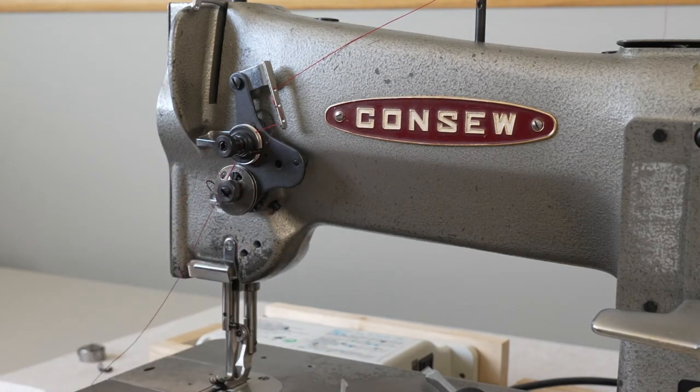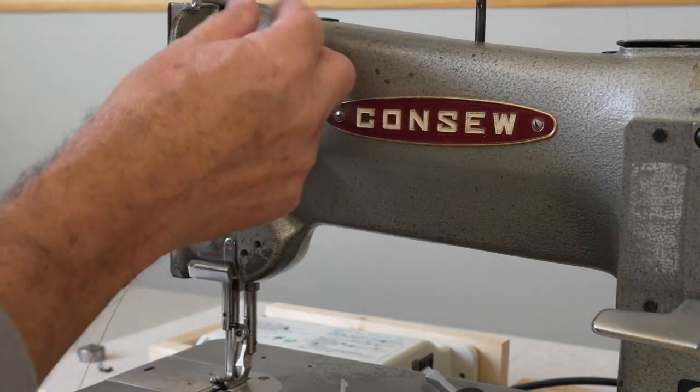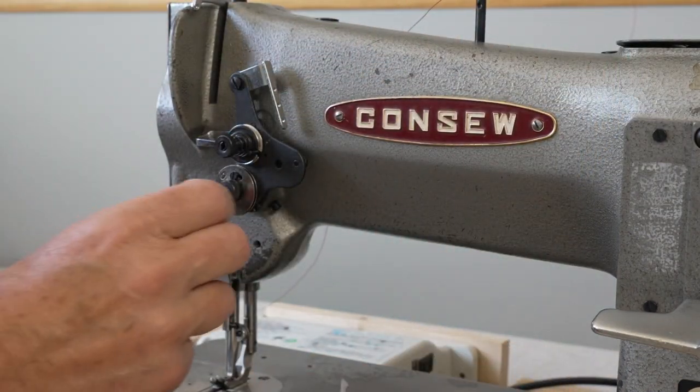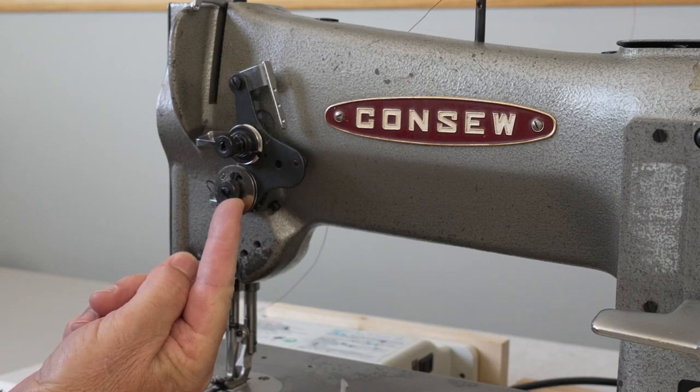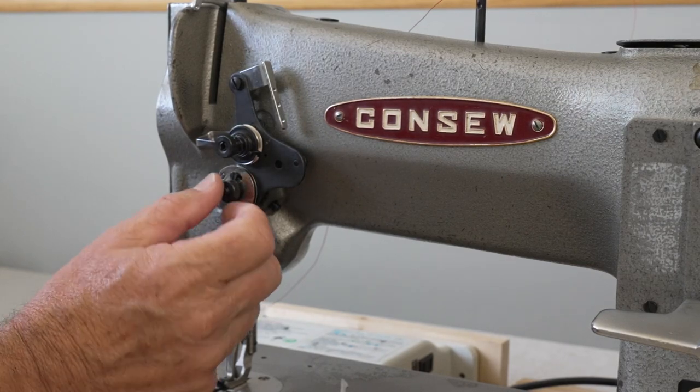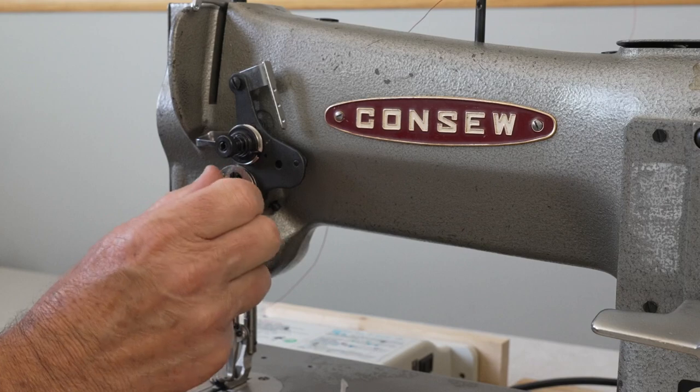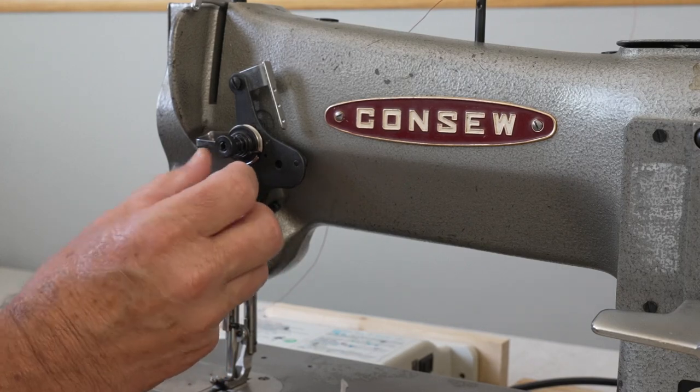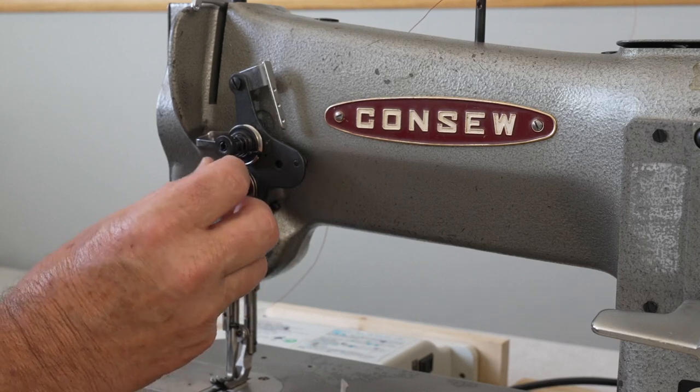So I'm going to go ahead and take this off. I'll just go ahead and get the threads out of the way. I'll take this off first. There's a thumb screw right here that needs to come off. Just twist that off counterclockwise.